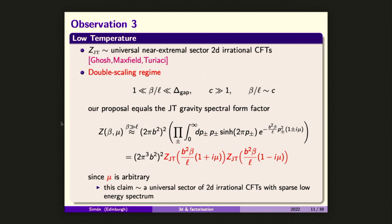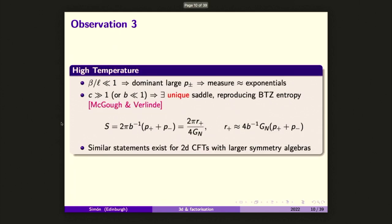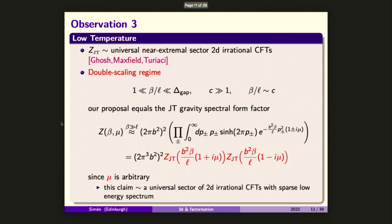If I give you this setup of 2D irrational CFTs and I study a near-extremal limit, this is where you get the partition function for JT or the Schwarzian action. Our proposal is natural to study at both high and low temperature. There is a double scaling limit at low temperature in which our partition function in the dual channel is actually equal to the square of the JT partition function.